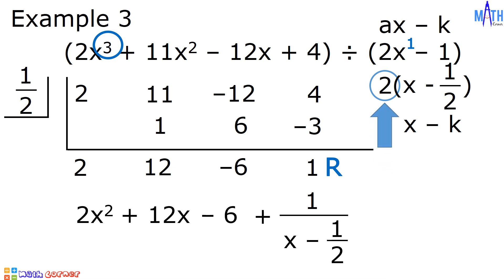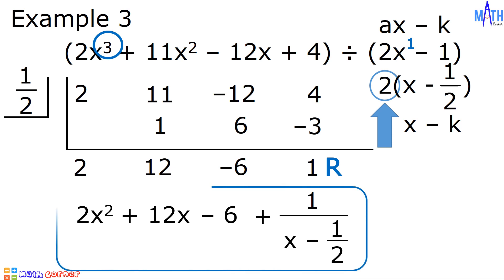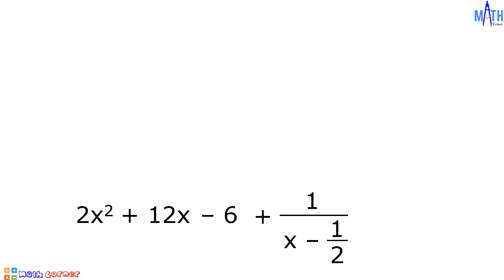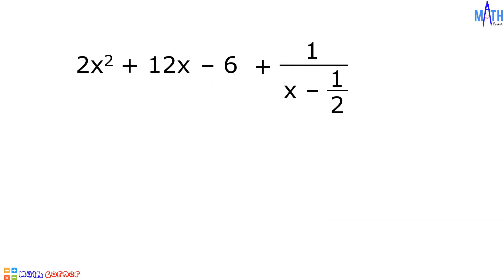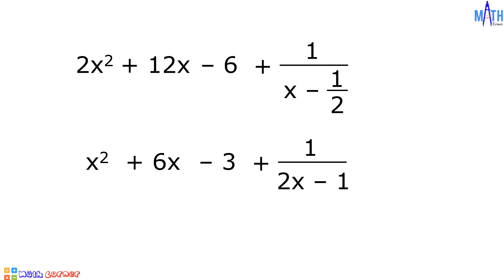But what happened to the 2 that we set aside? We will divide each term of this answer by 2. 2x squared divided by 2 is equal to x squared. 12x divided by 2 is equal to 6x. Negative 6 divided by 2 is equal to negative 3. And 1 over x minus 1 half, divided by 2, is equal to 1 over 2x minus 1. And this is the final answer: x squared plus 6x minus 3 plus 1 over 2x minus 1.